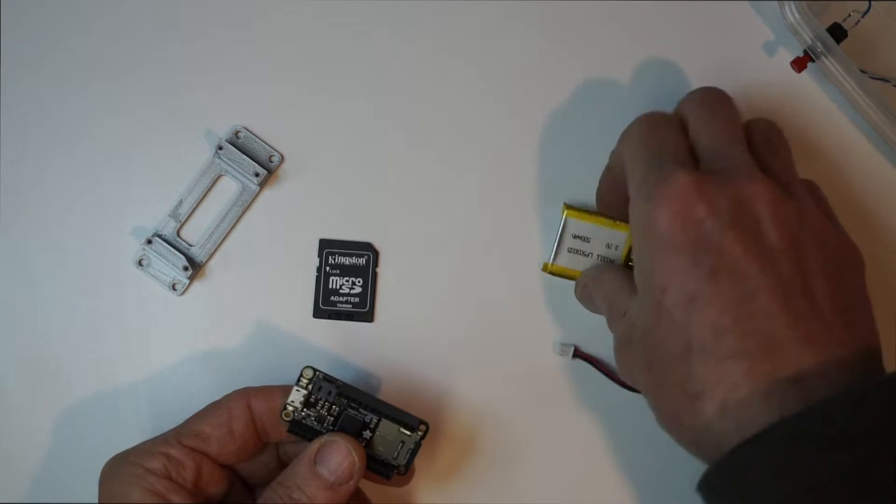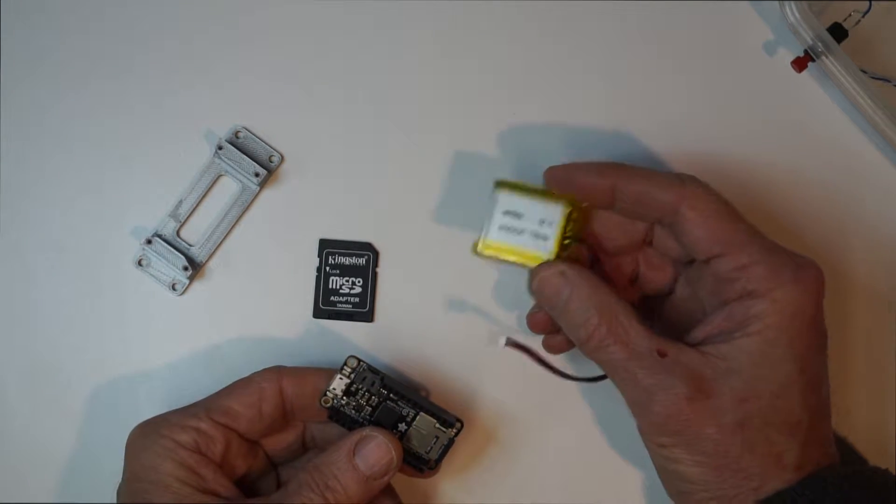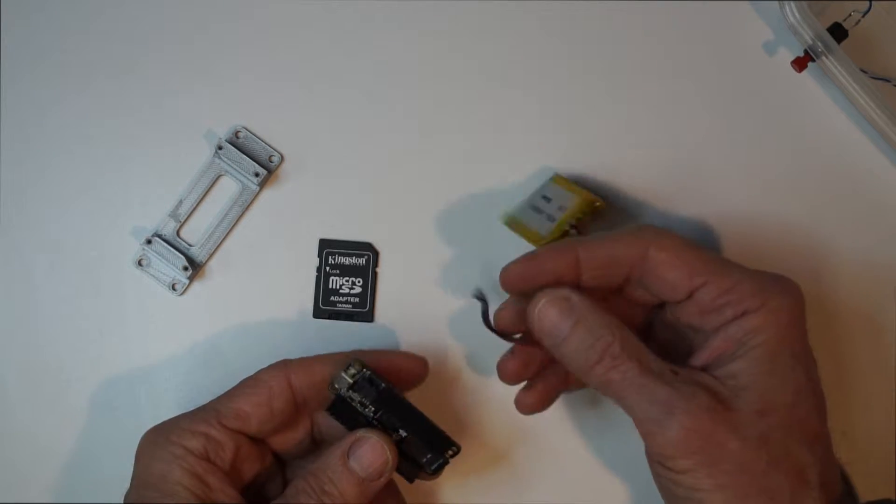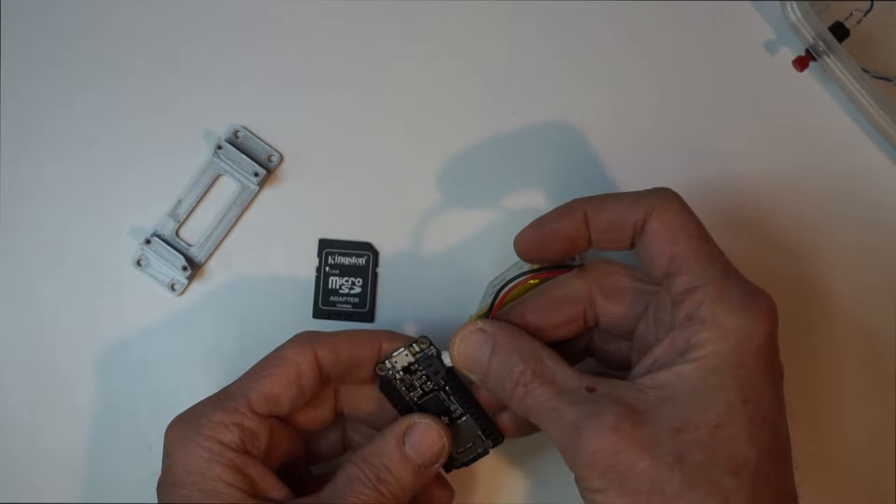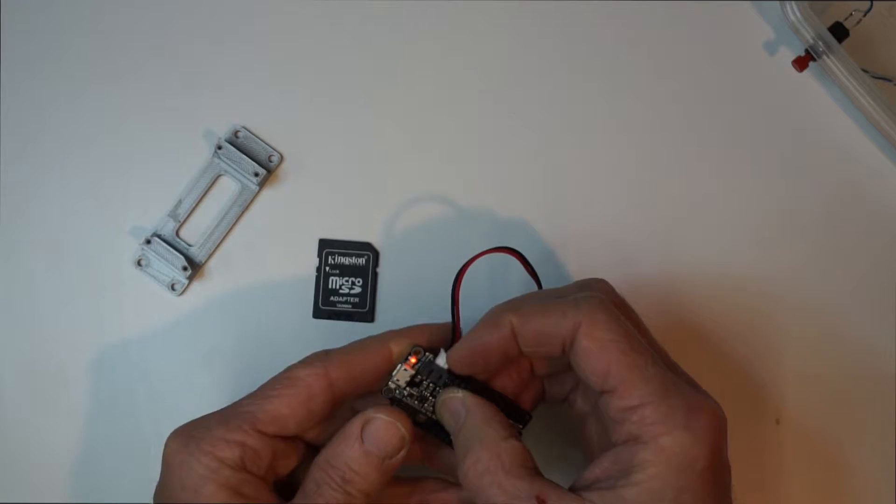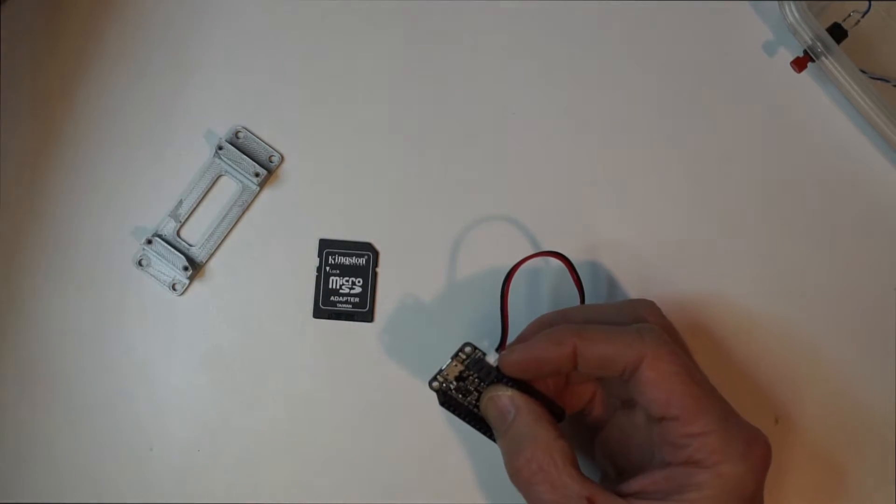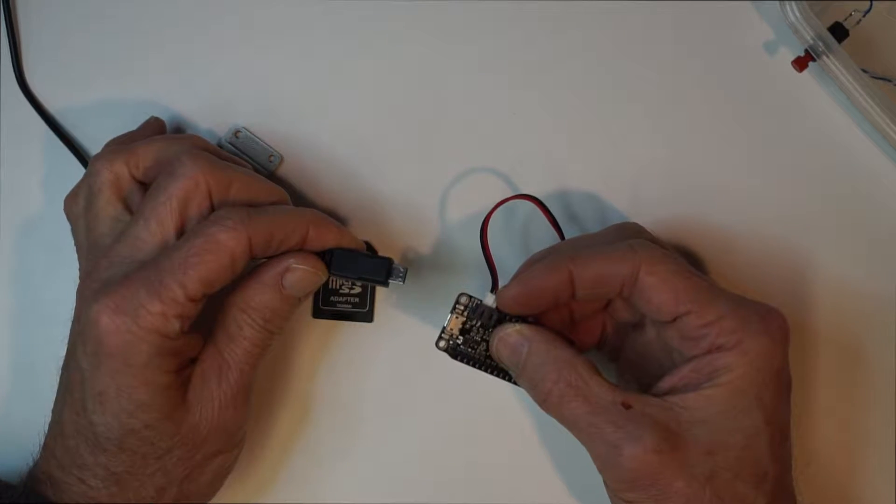It has a LiPo battery. You buy the LiPo battery extra, but it's got a LiPo battery charging circuit such that you can just plug the LiPo battery into it and it will power the system when it's running and it charges from a USB cable.